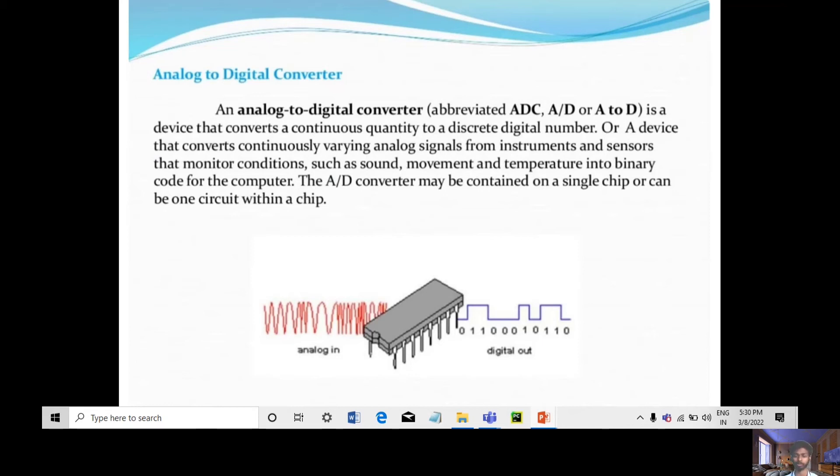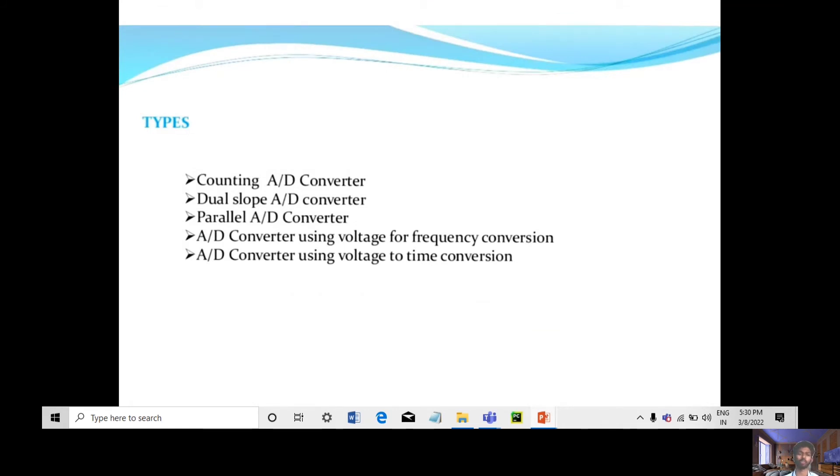The signals are converted to binary codes for computers. The ADC converter may be contained in a single chip or multiple circuit chips. It is mainly basically five types, including counting ADC converter.